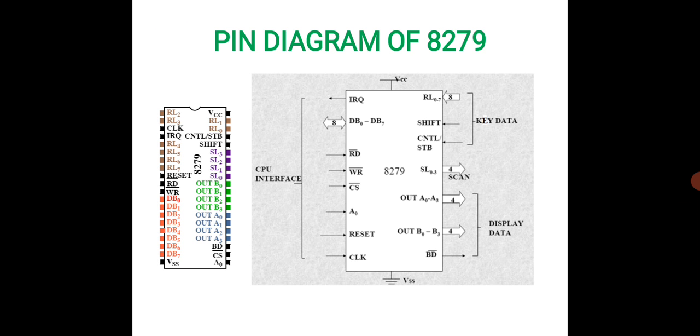In the keyboard section, we have the keys, control key, shift key, and all the return lines connected to the keyboard keypad. Similarly, in the display section, you have all 8 output lines divided into two sections: OUT A0 to A3 and OUT B0 to B3, which are connected to the display lines.